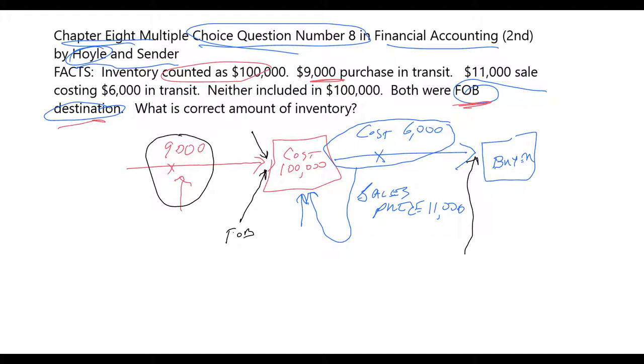Now notice because we are talking about the reported inventory, we're not really very interested in the sales price. That's not a cost number. That's what you sold it for. So when the question says, how much should be in ending inventory?